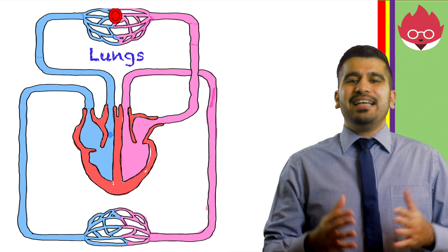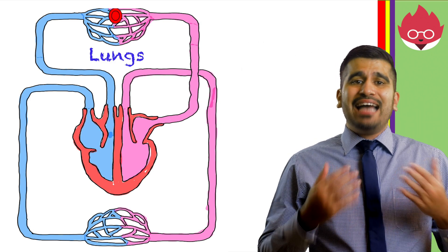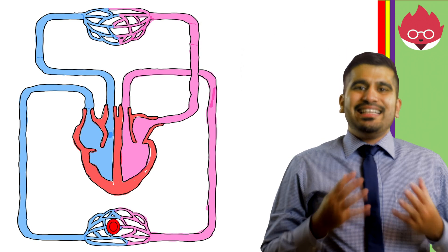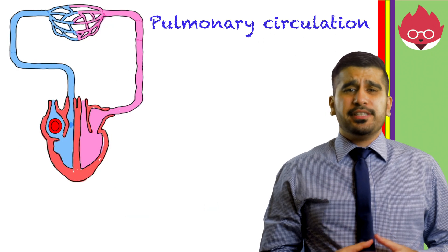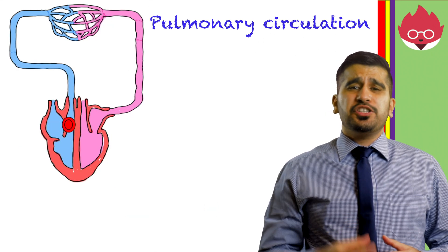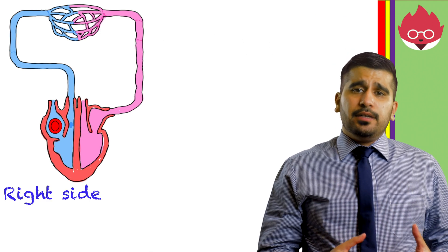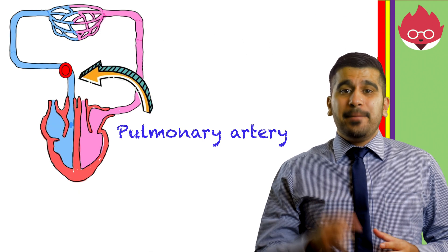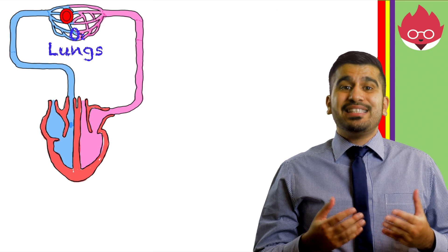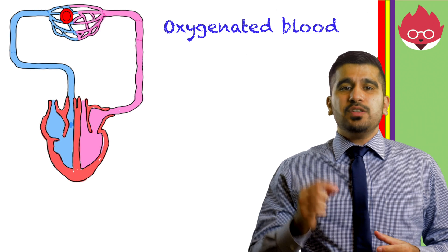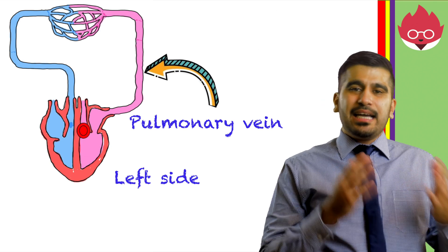This is called the double circulatory system. Blood is pumped from the heart to the gas exchange organs such as the lungs, then back to the heart, and then pumped to the rest of the body. The pulmonary circulation carries deoxygenated blood, which leaves the right side of the heart via the pulmonary arteries, making its way towards the lungs where blood becomes oxygenated. This oxygenated blood returns to the left side of the heart via the pulmonary vein.